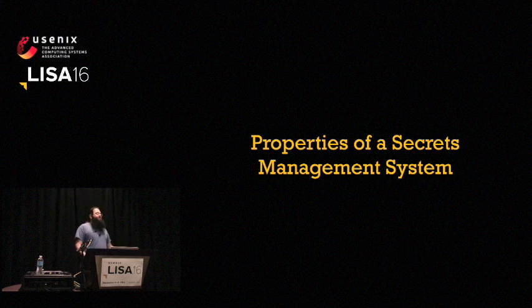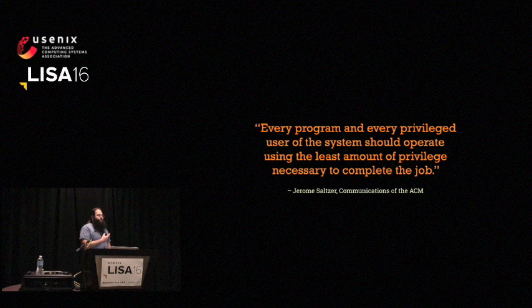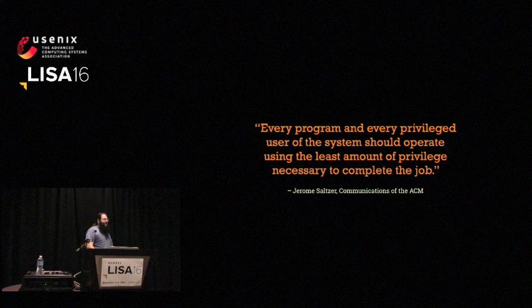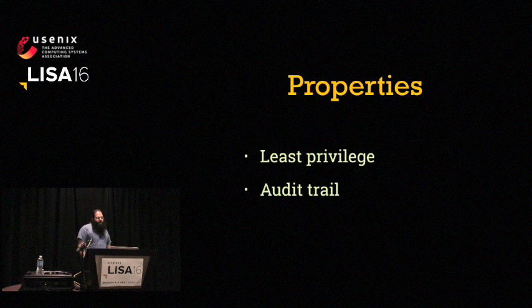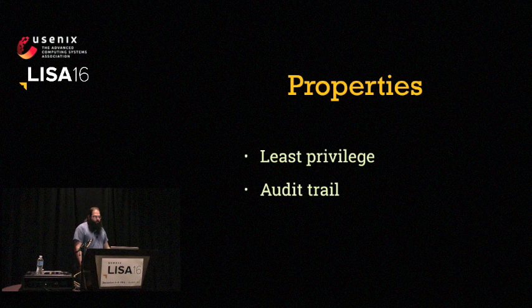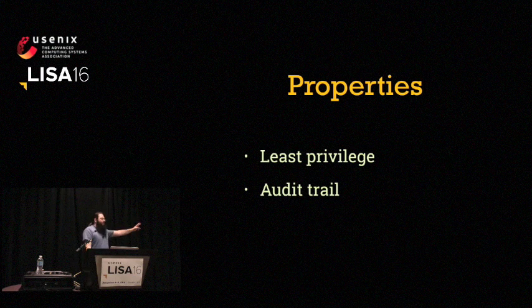Let's talk about properties of secrets management systems. The principle of least access, or principle of least privilege, is generally attributed to Jerry Salter in a 1974 ACM paper. It's mostly common sense but so often ignored that it bears strenuous repetition: a service or tool should have only access to the secrets it needs and nothing else. The quality of every secrets management tool should be judged on two main properties: first, how well can we implement principle of least privilege? And second, how much audit information is there so that when things go wrong — and they will — you have information about what was accessed, when, where, and why?